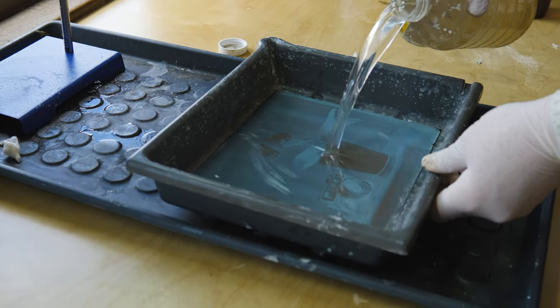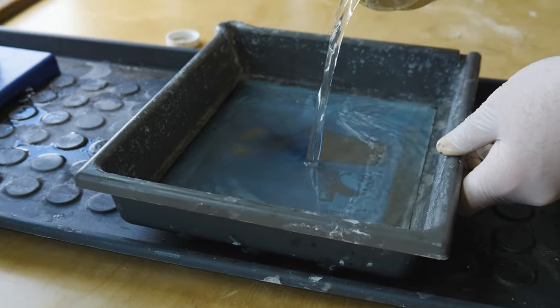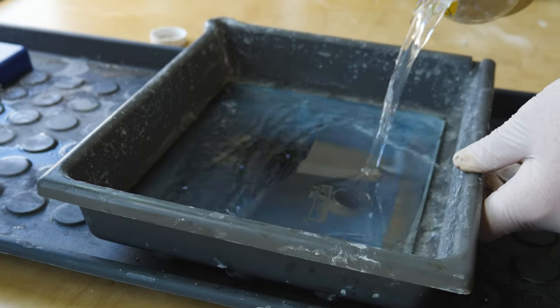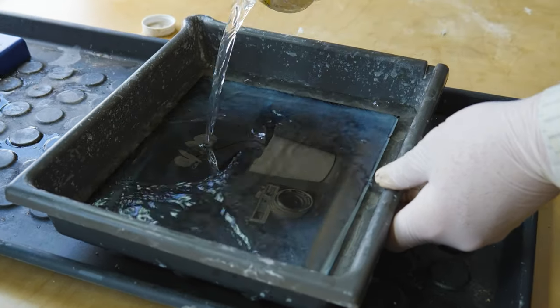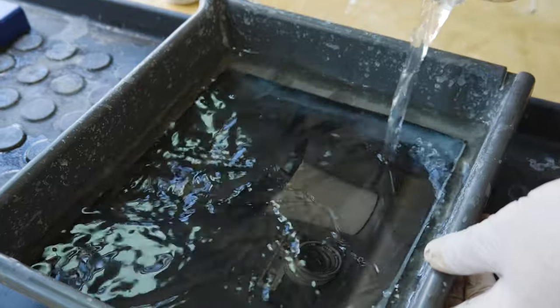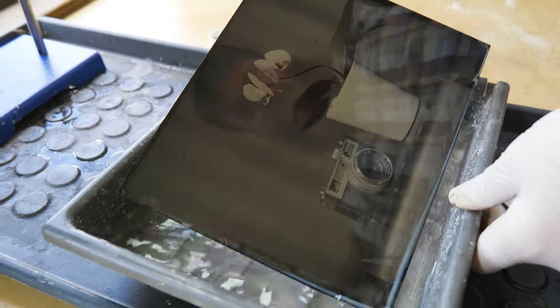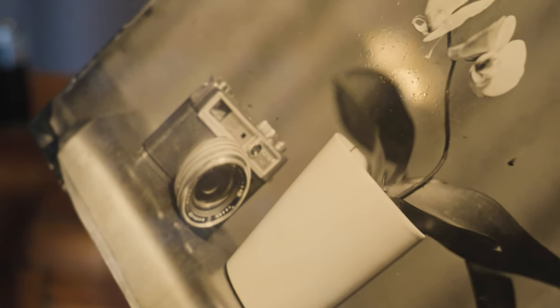The next step is actually to fix the plate. And what this does is it removes that excess silver, it removes that teal area and reveals the shadows of the image. And this is where the negative inverts into a positive and you get to see your final image appear. This is a really magical moment in the process and really what drew me to the process in general.